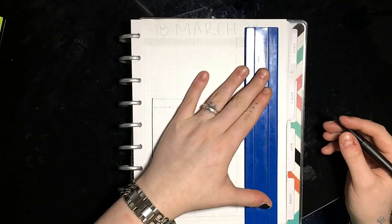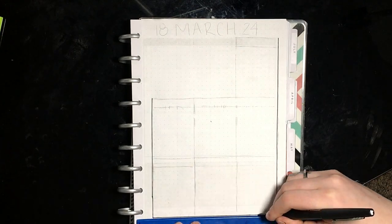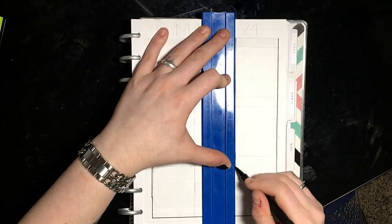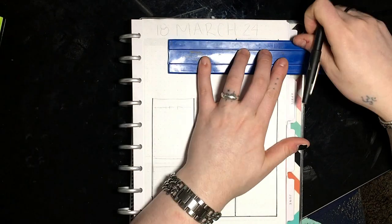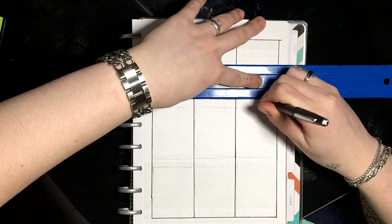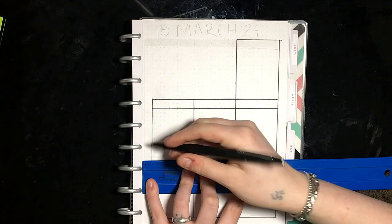And then I'm gonna jump over to next week's spread, which is just the weekly spread with my days of the week. This layout's pretty basic, there's not really much to it. There's seven boxes for each of the seven days of the week.